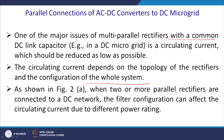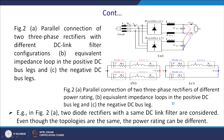As shown in figure 2a, two or more parallel rectifiers are connected to the DC network. The filter configuration can affect the circulating current due to different ratings. For example, consider one grid with one rectifier and another rectifier in parallel. Due to loading and capacitor value mismatch, if these two points are connected to serve the load, different voltages appear across them and a circulating current exists between points A and B.